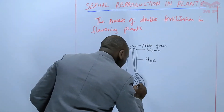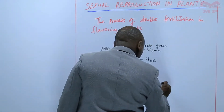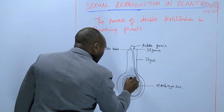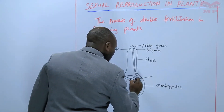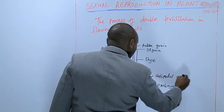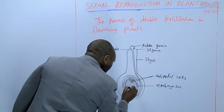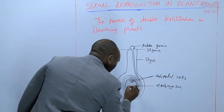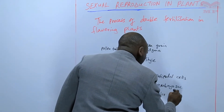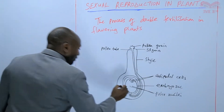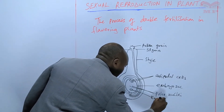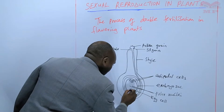This is the embryo sac — the mature embryo sac — containing the antipodal cells, containing the polar nuclei. We have the egg cell here, and then we have the synergids.